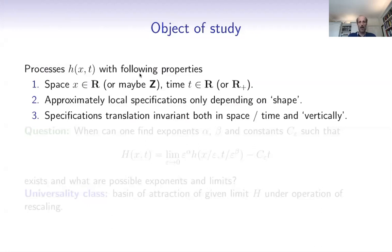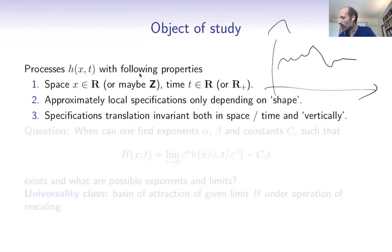We want the way it behaves to only depend on the shape of what it looks like locally. We want that specification to be translation invariant in space and time — it shouldn't explicitly depend on where you are in space or when you are in time. We also want it to be translation invariant vertically: if locally H has some kind of shape, the actual value of H shouldn't matter in the rule of how it's going to evolve.